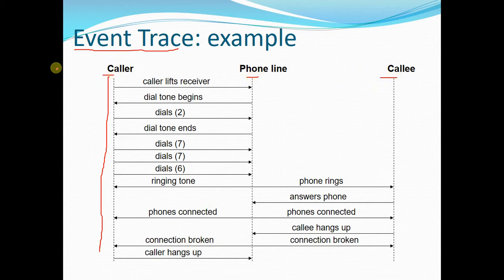Different classes have different relationships with each other. There are different relationships like association, inheritance, and aggregation. The particular relationship we are interested in for this diagram is association.